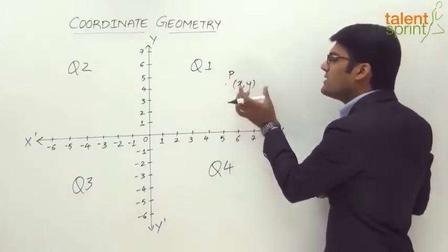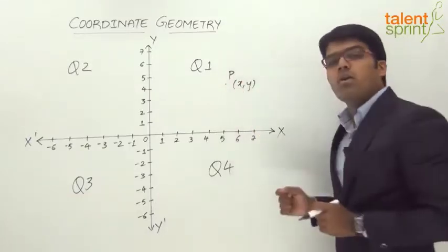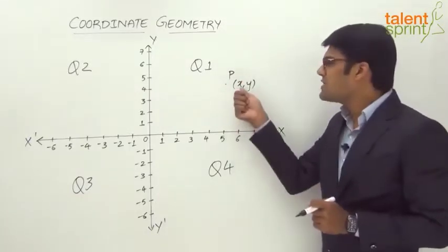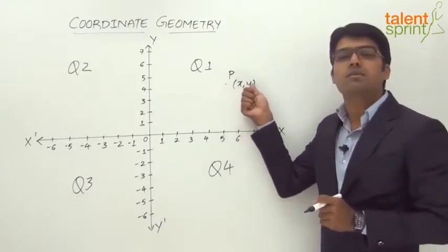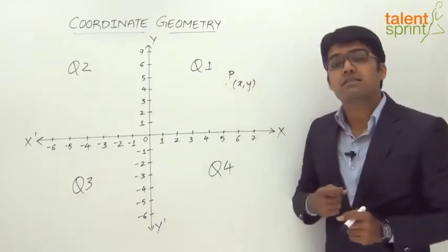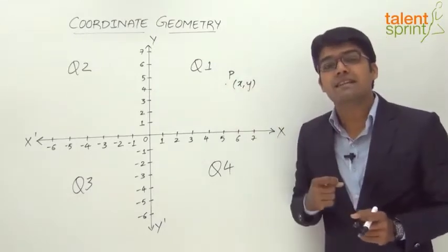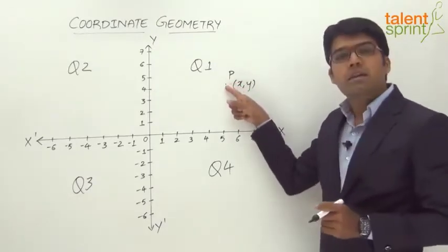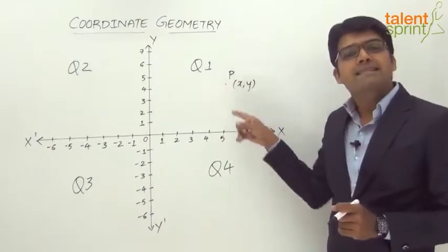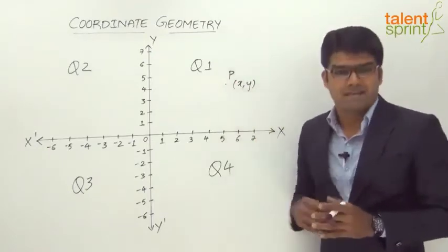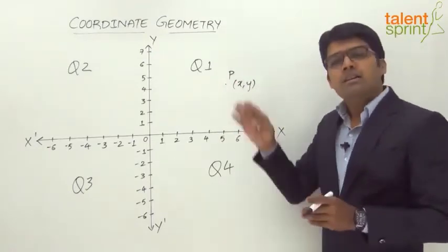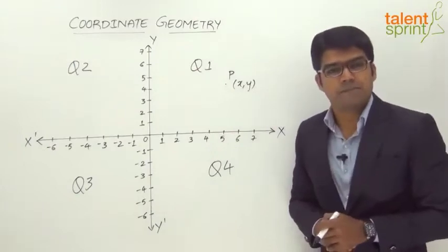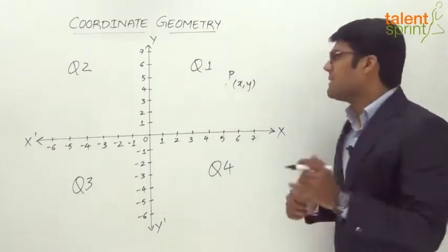So (x, y) is known as an ordered pair — these are two numerical values. The x and y indicate the distance of point P from the x-axis and y-axis, or the horizontal distance and the vertical distance of the point P.